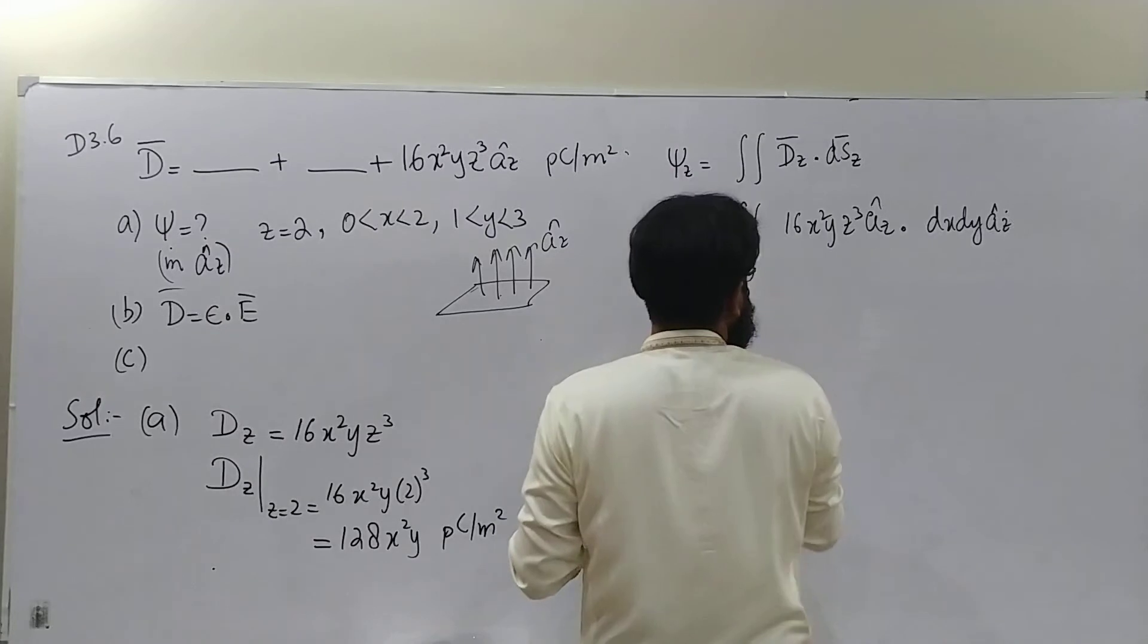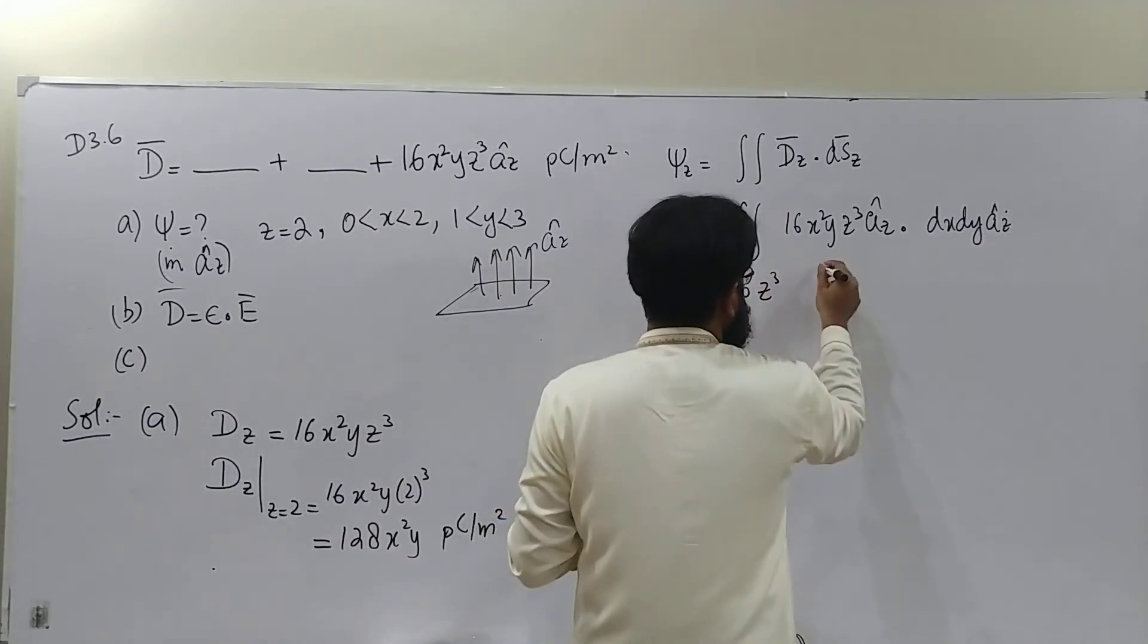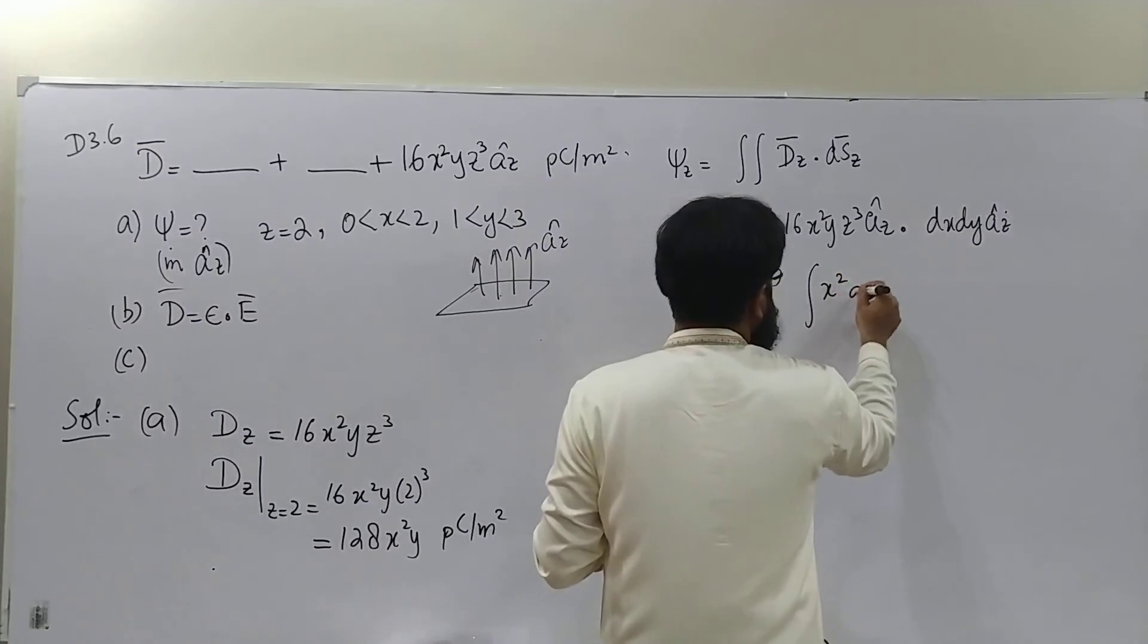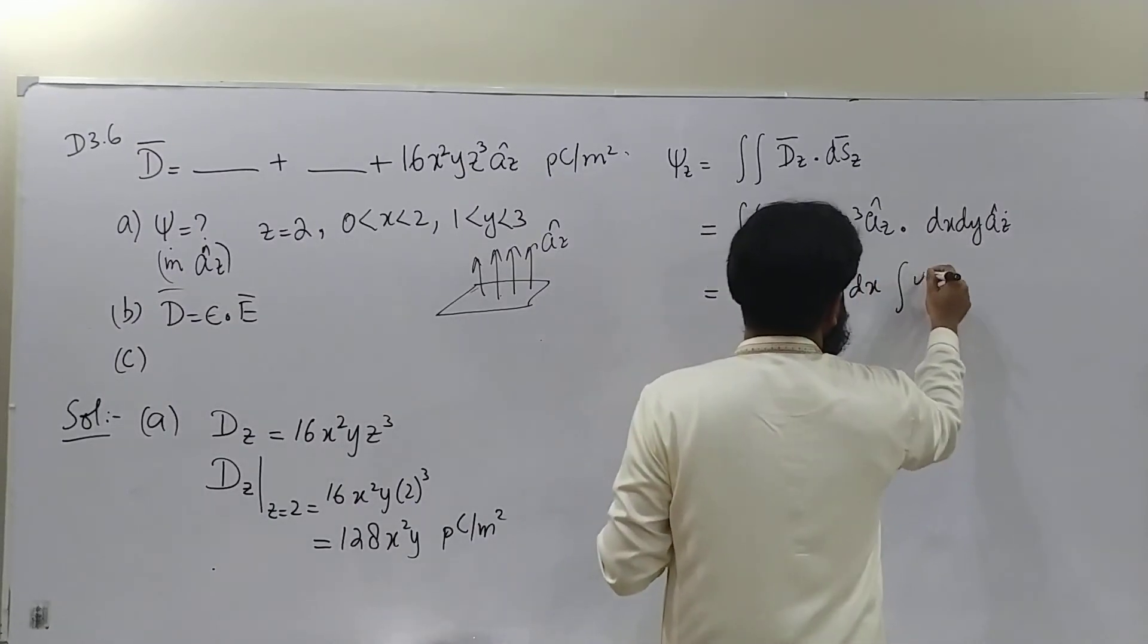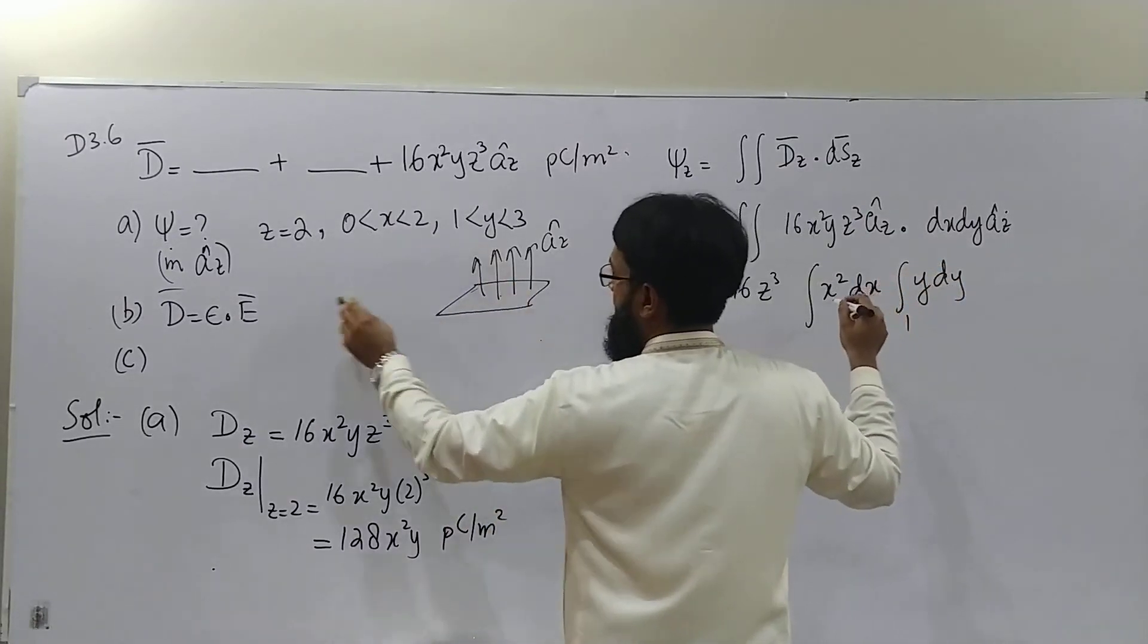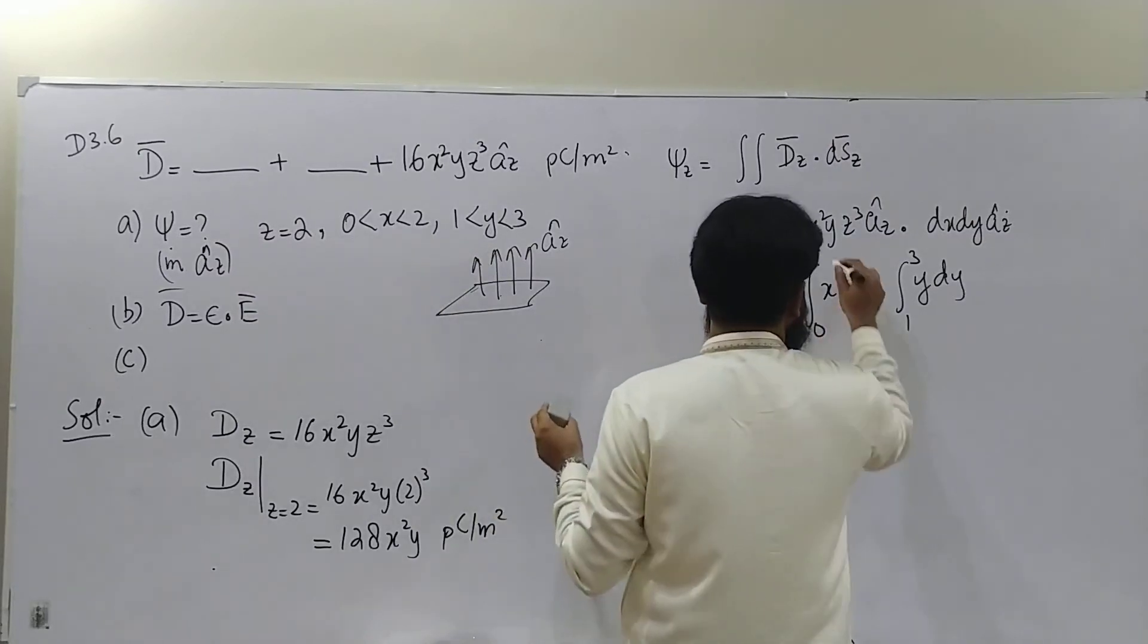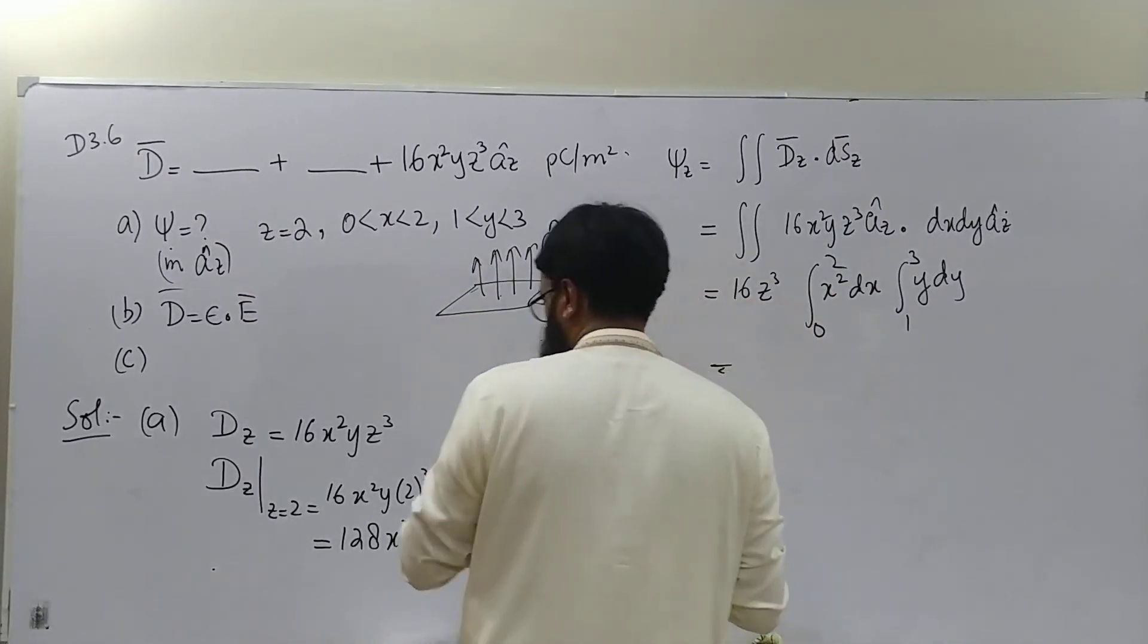Double integral 16, Z cube. The integral will have x square dx dy, limits y from 1 to 3, x from 0 to 2. Solve it and you should get the answer.